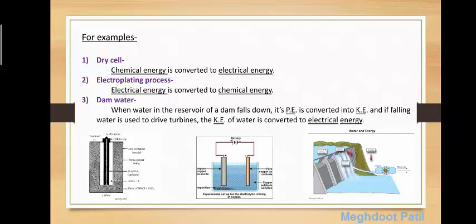When water falls down from an outlet, its potential energy is converted into kinetic energy due to the velocity of water. And if the falling water is used to drive turbines, the kinetic energy of water is converted to electrical energy.